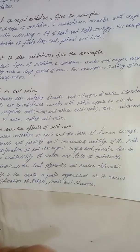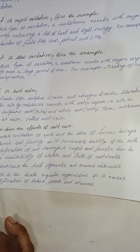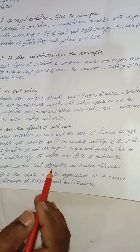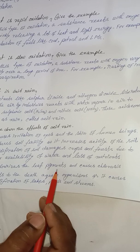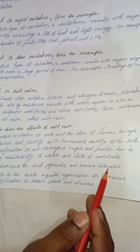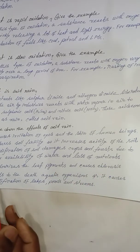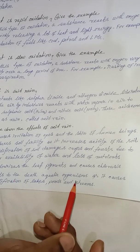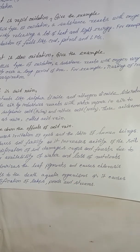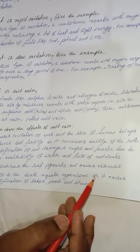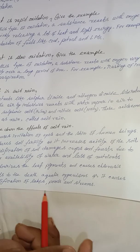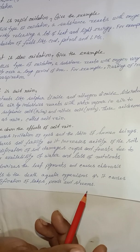Further effects of acid rain: it decolorizes the leaf pigment and causes chlorosis. It leads to the death of aquatic organisms such as fish, as it causes acidification of lakes, ponds, and streams.